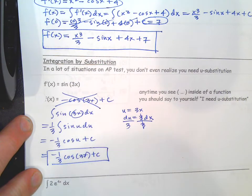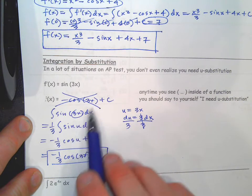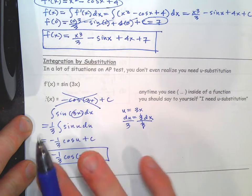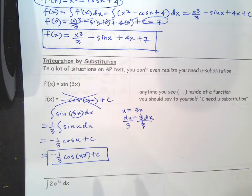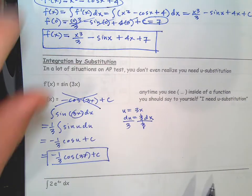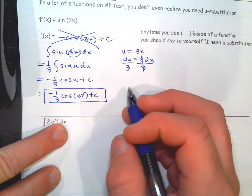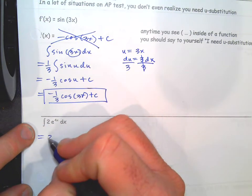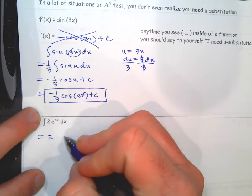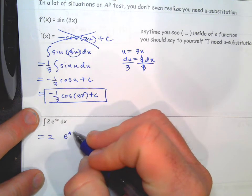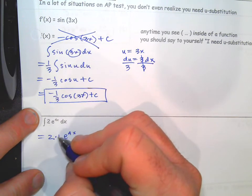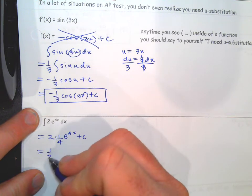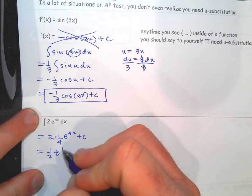Let u equal 3x, so du equals 3 dx. We get a one-third out front, and the integral becomes (1/3) ∫ sin u du, which gives negative one-third cosine u plus C. Then rewrite back in terms of the original variable — replace u with 3x. That's the answer.